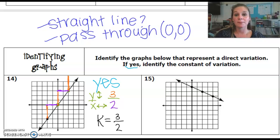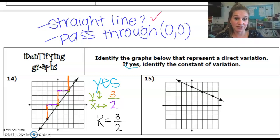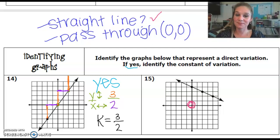Let's see if this example passes that test. First off, do you think number 15 is a straight line? Because I definitely think that it's a straight line. The next part though is that it has to pass through zero zero. Here's zero zero right here, the origin.